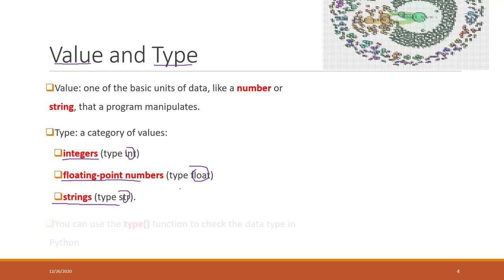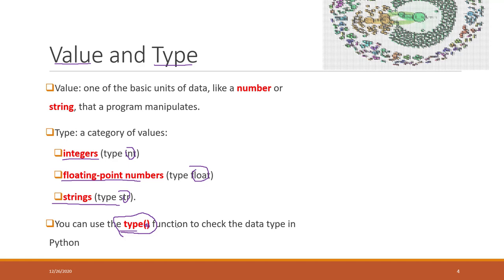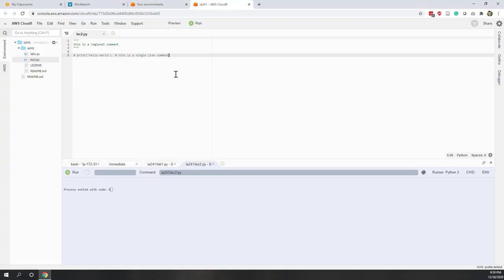In Python, if you want to check the data type of a specific value, you can use the built-in function called type(). It's already built into Python. You use type() with parentheses, put the data inside, and this function will return the type of that data.